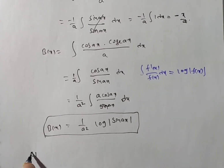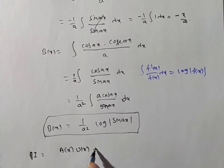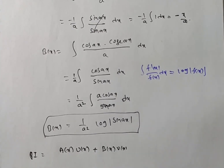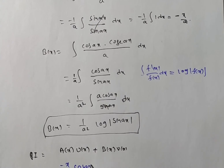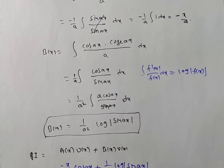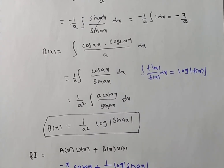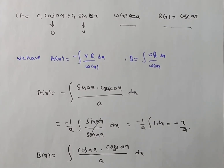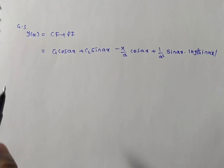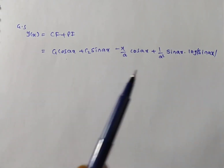The particular integral is PI = A(x)·u(x) + B(x)·v(x) = (−x/a)·cos(ax) + (1/a²)·log|sin(ax)|·sin(ax). The general solution is y(x) = CF + PI = c1·cos(ax) + c2·sin(ax) − (x/a)·cos(ax) + (1/a²)·sin(ax)·log|sin(ax)|. This is the solution for (D² + a²)y = cosec(ax).